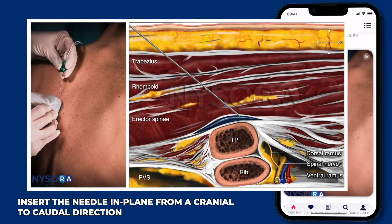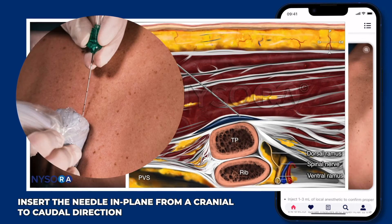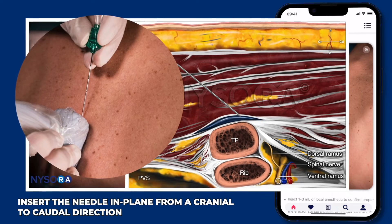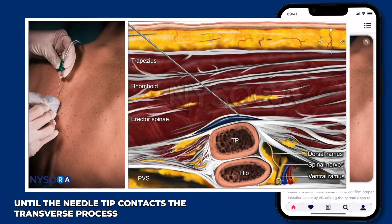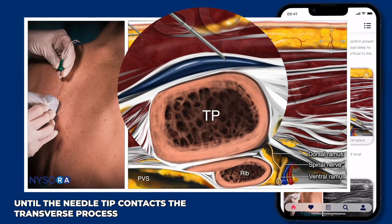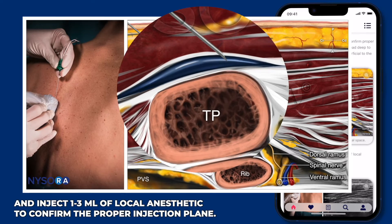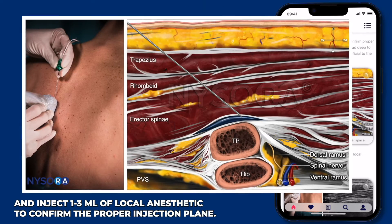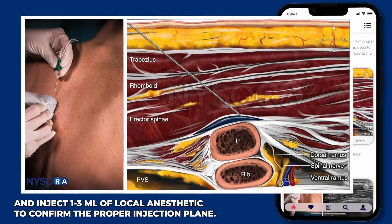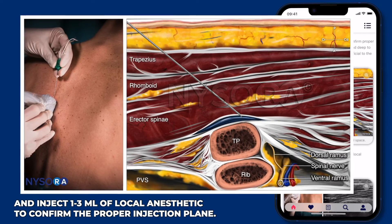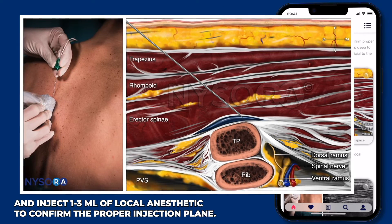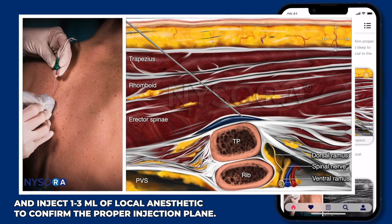Two: insert the needle in-plane from a cranial to caudal direction until the needle tip contacts the transverse process, and inject 1 to 3 milliliters of local anesthetic to confirm the proper injection plane.